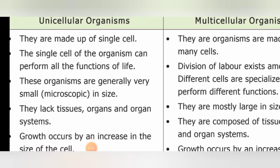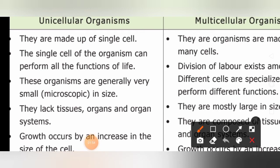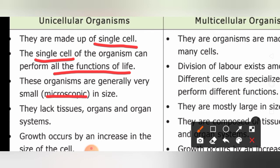We are going to differentiate between unicellular organisms and multicellular organisms. Unicellular organisms are made up of a single cell. The single cell of the organism can perform all the functions of life. These organisms are generally very small, that is microscopic in nature. They lack tissues, organs, and organ systems. Since they are made up of a single cell, there are no tissues, no organs, and no organ systems.